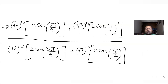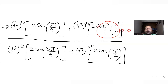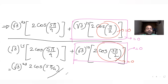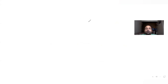Since cos(90°) = 0 and cos(270°) = 0, those entire terms vanish. We are left with √3^23 · 2·cos(5π/4) in the numerator, and √3^15 · 2·cos(5π/4) in the denominator. The factors of 2 and cos(5π/4) cancel out, leaving √3^23 / √3^15.